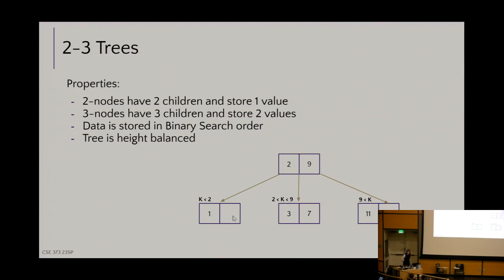Three-nodes have two pieces of data but three children — that's where the three comes from. Data is still stored in binary search order and we maintain height balance. With values two and nine stored in a three-node: everything less than two goes left, everything between two and nine goes in the middle, and everything greater than nine goes right.